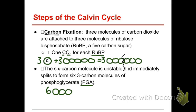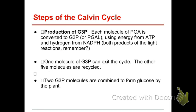PGA stands for phosphoglycerate. You don't really have to remember that — it's just not the professional golfers' association. So we have six of these things, six of these three-carbon molecules. Next thing that happens, we take that PGA and we turn it into something called G3P, or some books call it PGAL. It's really the same thing, just a different name.